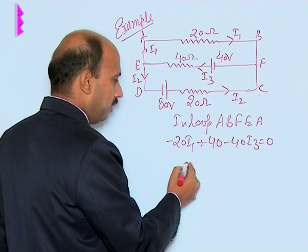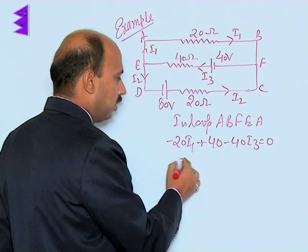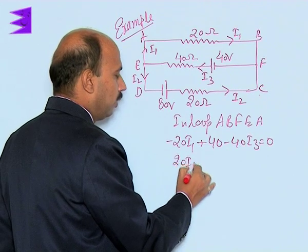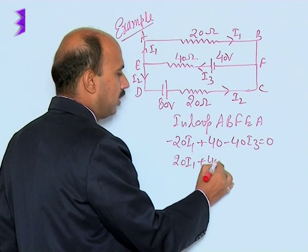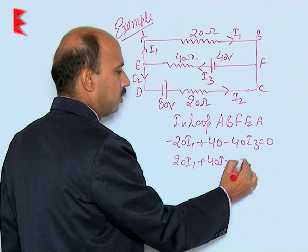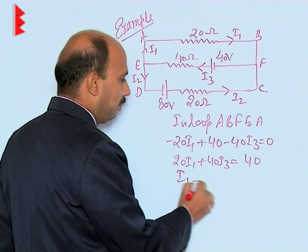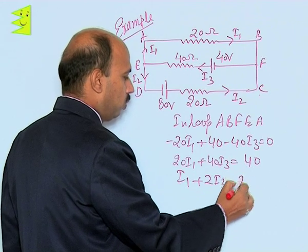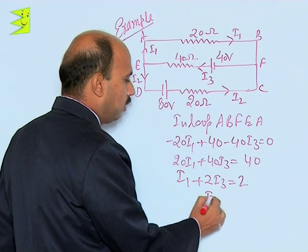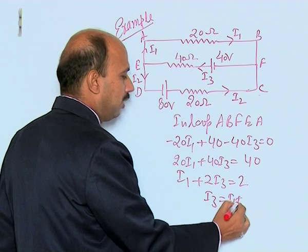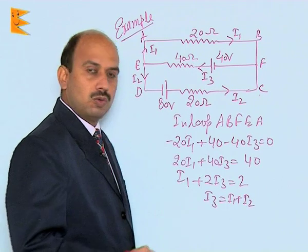Then minus 40 I3 is equal to 0. By solving this we can get 20 I1 plus 40 I3 is equal to 40. We can write I1 plus twice of I1 plus I2 is equal to 2.